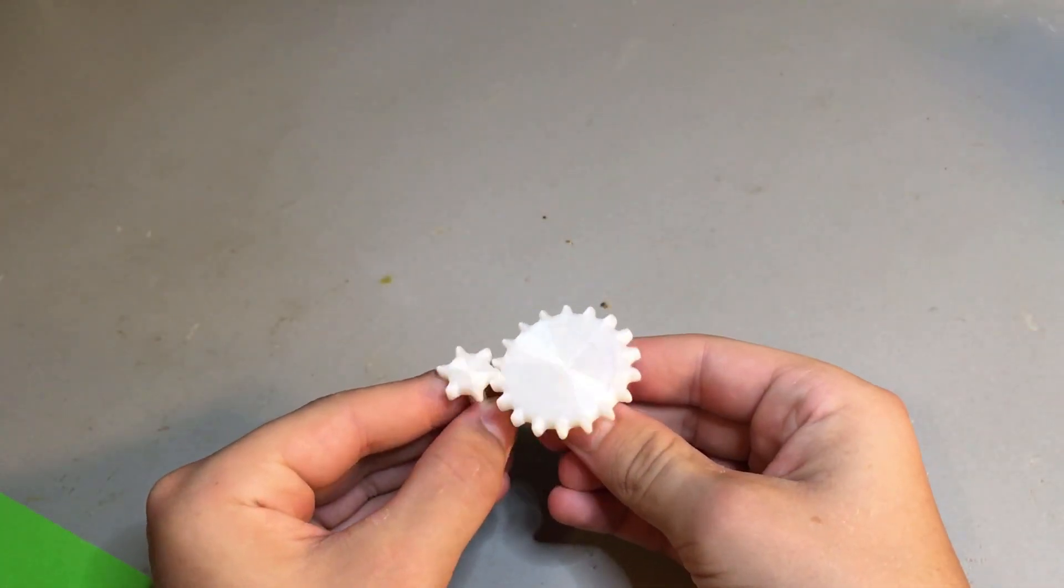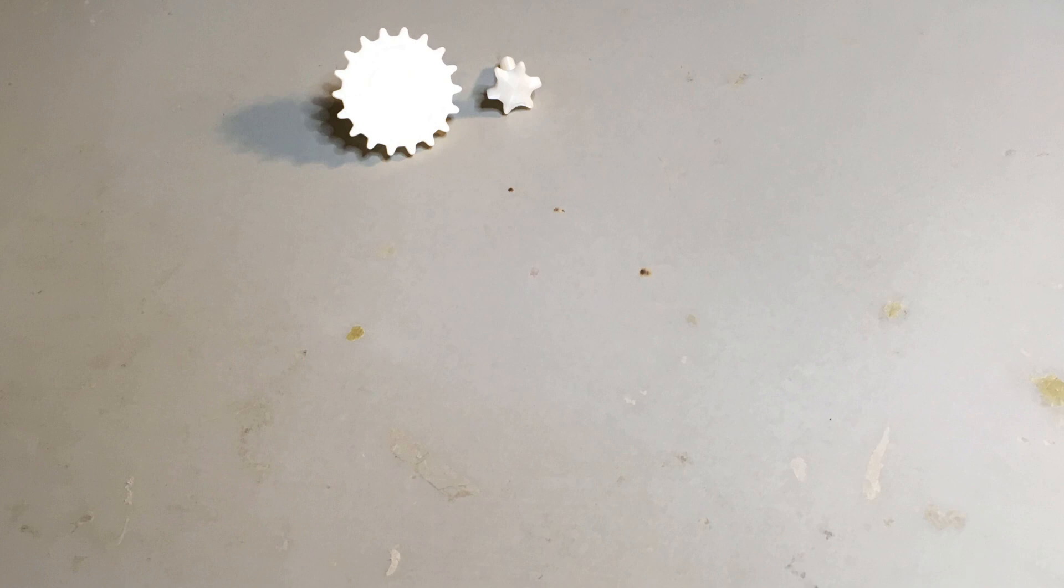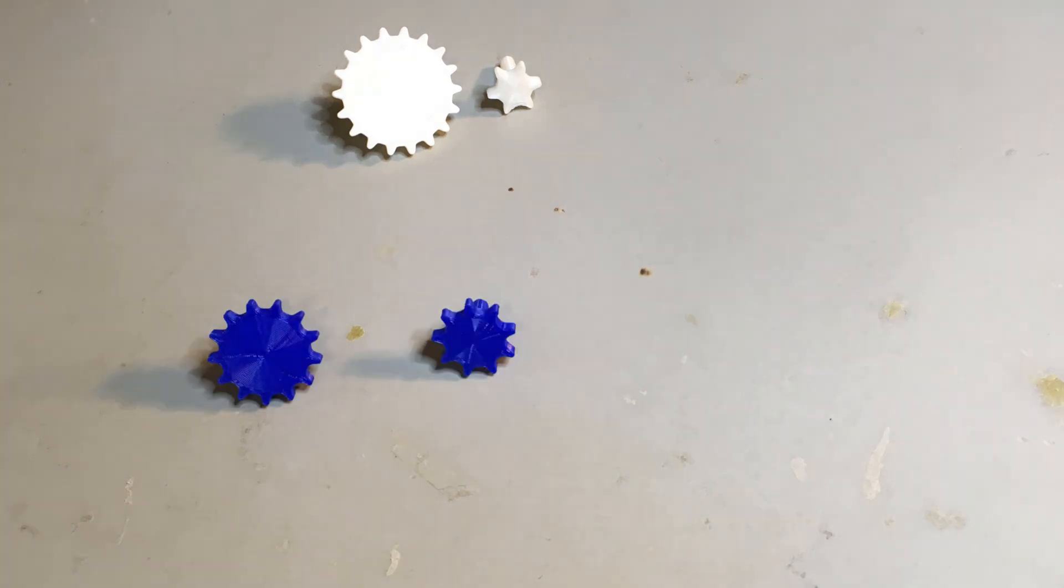If you've seen a gear before, you know that they rotate together like this. By putting different gears together, you can change the torque and speed of your motor.